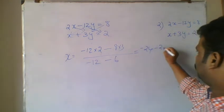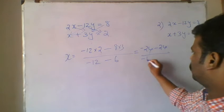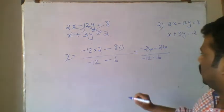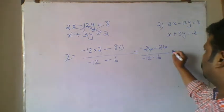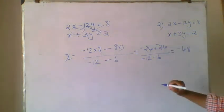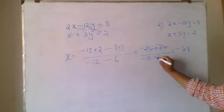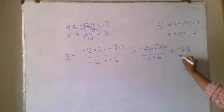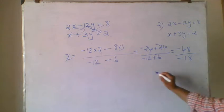Minus 24 again divided by minus 12 minus 6. So this will be minus 48 plus minus minus 48, minus 12 minus 6 is equal to minus.